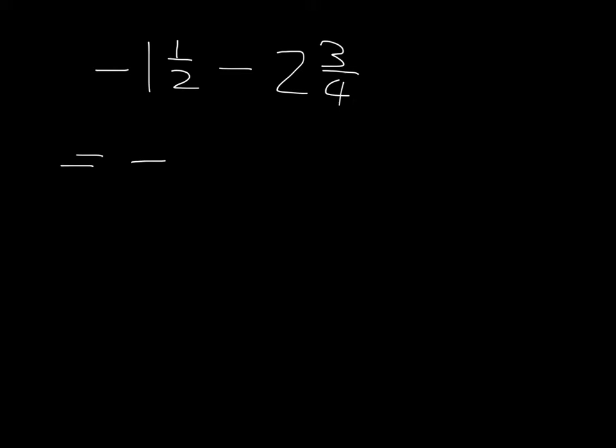So I'm going to turn this one and a half into an improper fraction. And I do this by saying one times two is two plus one. I get three over two. And then I'm also going to turn this thing into an improper fraction. So I say two times four is eight plus three gives me 11 over four.